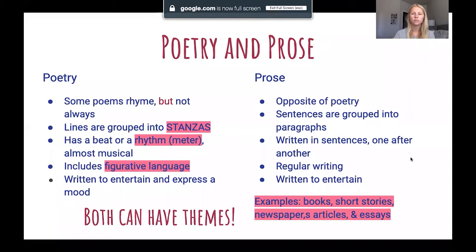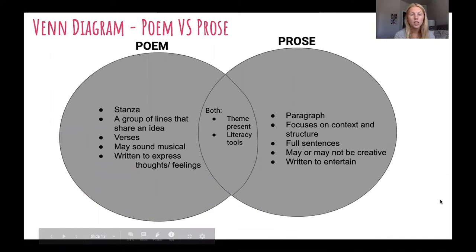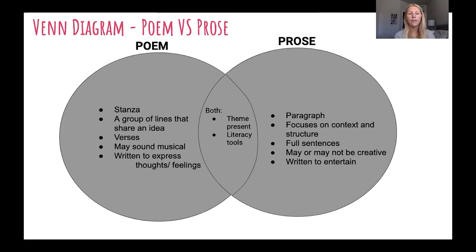Now let's look at a Venn diagram comparing the two — a poem versus prose. On our poem side we see stanza: a group of lines that share an idea. Poems may sound musical and are written to express thoughts and feelings.